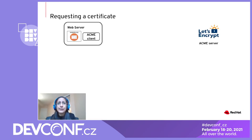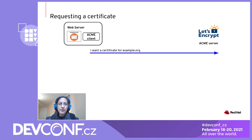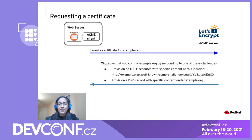To request a signed certificate, the ACME client first sends a request to the ACME server indicating the domain name it wants a certificate for — in this example, example.org. The ACME server then responds to this request by providing the client with some challenges to prove that the web server really does control example.org.